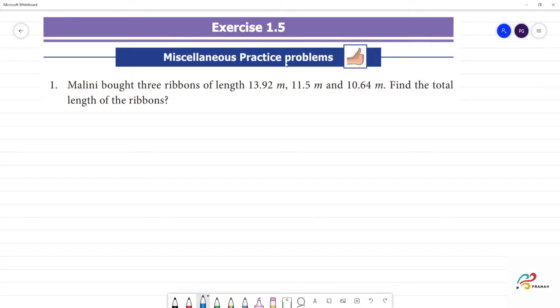Exercise 1.5, Miscellaneous practice problem. First question is what we need to do. Malini bought 3 ribbons: 13.92 meters, 11.5 meters, and 10.64 meters. Find the total length.